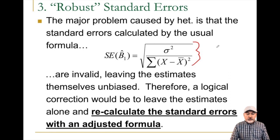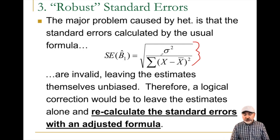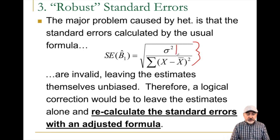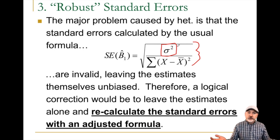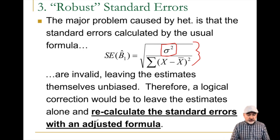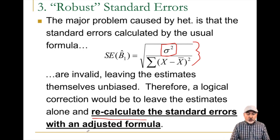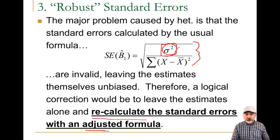This goes back to why we care about the heteroscedasticity problem. The formula for the standard error of the b1-hat OLS coefficient is calculated as the square root of sigma-squared over the sum of (x minus x-bar) squared, but this assumes a constant sigma-squared. When the actual error is heteroscedastic, we get all wrong answers. What the robust standard error option does is recalculate those variances and standard errors with a corrected formula that has sigma-squared sub i — allowing for variability across observations.